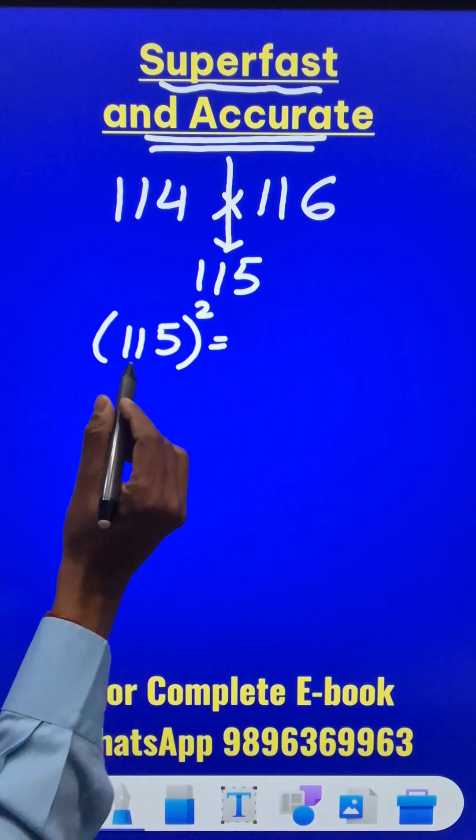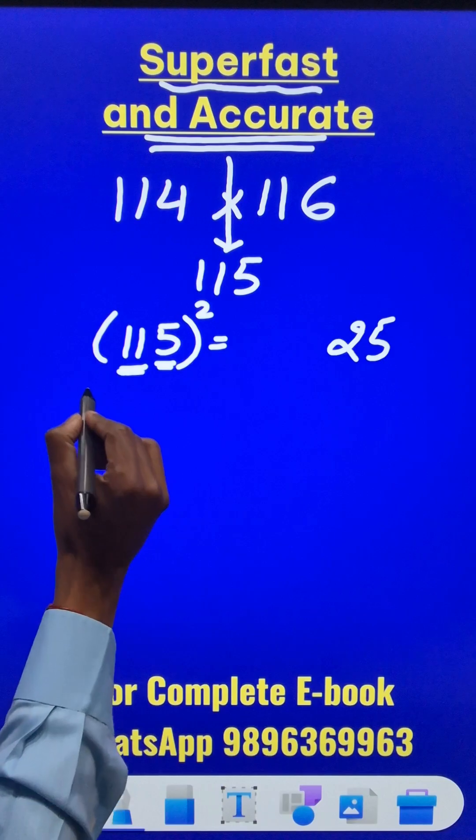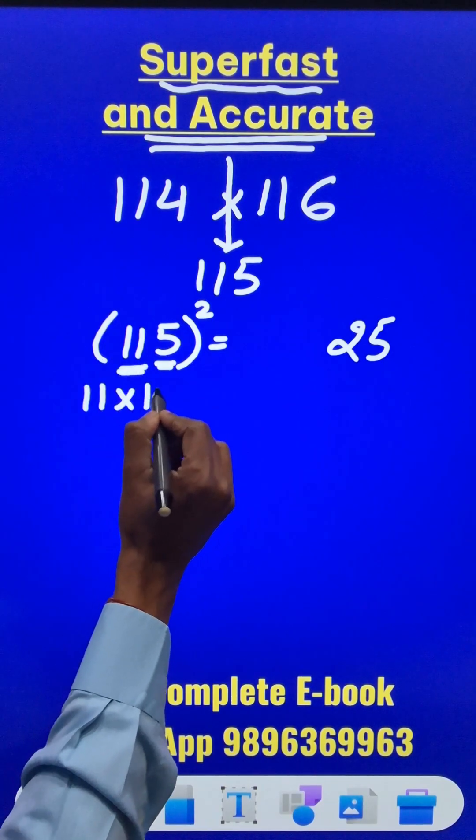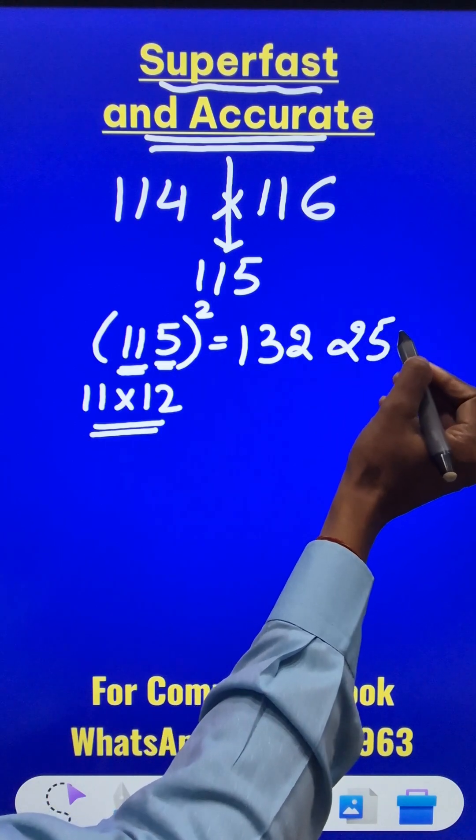I hope you know the Vedic Maths method. Numbers ending in 5, the square always ends in 25. Now the remaining number 11, when multiplied by the consecutive number 12, gives you 132, and so the square of 115 is 13225.